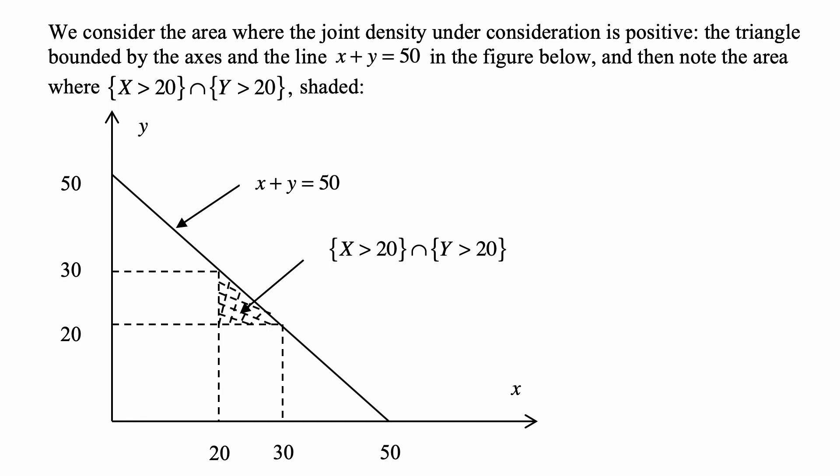We consider the area where the joint density under consideration is positive. That's the triangle bounded by the x-axis and y-axis, and the line where x + y equals 50 in the figure below. x + y equals 50 is the straight line connecting the point where y equals 50 and the point where x equals 50.